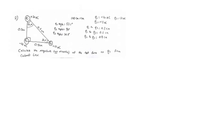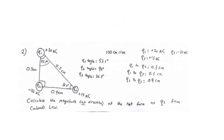This next problem is kind of tough. Now we have three charges in a right triangle — it's got a 90-degree angle, as opposed to the isosceles triangle in the last problem. Q2 is the star of the show this time — that's the charge we're analyzing. Q2 has negative 32 microcoulombs. Q1 has positive 20 microcoulombs. Q3 has positive 15 microcoulombs. The goal is to find the strength of the net force, the total force on Q2.